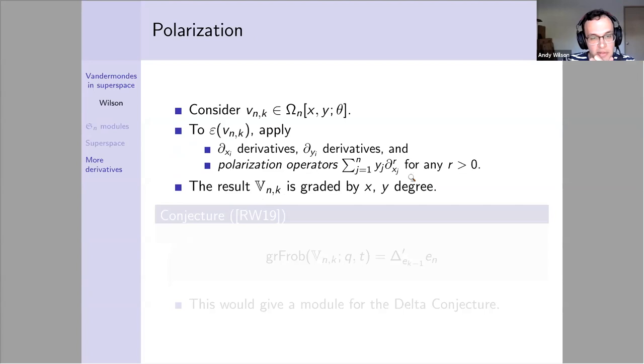I'm going to start with the same super monomial as before, except now I'm thinking about this as living in a space with two sets of commuting or bosonic variables, x's and y's, and one set of anti-commuting variables. I'm going to take x derivatives, also y derivatives, and apply polarization operators. This is a standard way to introduce y variables when you just start with x variables. The result is graded by x and y degree, I'll denote it with this blackboard capital V.